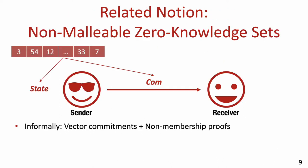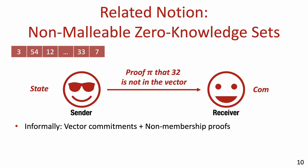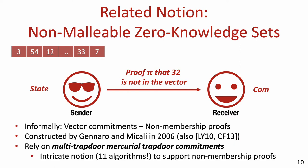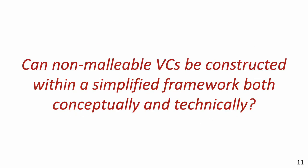A related notion that has been explored is non-malleable or independent zero-knowledge sets. Roughly, this can be seen as VCs that allow for non-membership proofs — one can prove that a certain element is not in the underlying vector. Such schemes were defined and constructed by Gennaro and Micali, but their construction relies on the notion of multi-trapdoor mercurial trapdoor commitments, which requires no less than 11 algorithms. This leaves open the question of whether non-malleable VCs can be constructed within a simplified framework, both conceptually and technically.